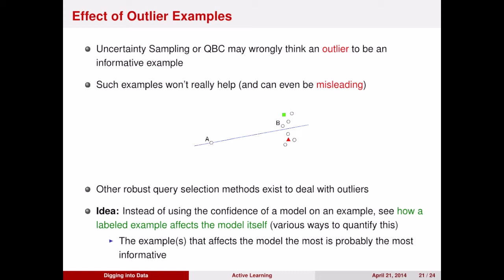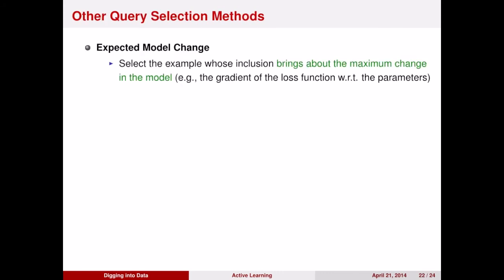Another way of choosing examples to label is to choose examples that change the model itself. And thus, those examples will be the most informative. So one example of this is looking at the expected model change. If you have some parameters that describe your model, such as the vector of a support vector machine or the coefficients for logistic regression, see which example, if you included it, would change those parameters the most.